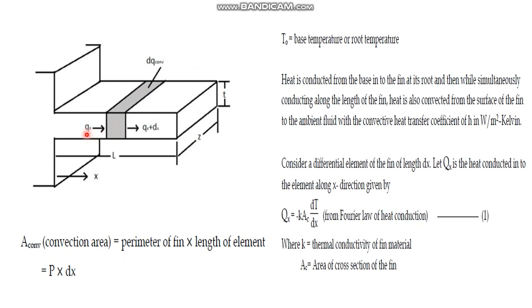The amount of heat entering the elemental area by conduction, that is qx, is given by Fourier's law of heat conduction: qx = -k · Ac · (dT/dx), where k is the thermal conductivity, Ac is the cross-sectional area, and dT/dx is the temperature gradient.